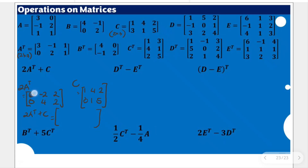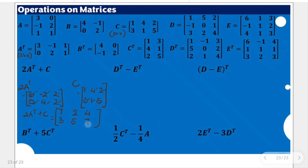6 plus 1 gives 7. Negative 2 plus 4 gives positive 2. 2 plus 2 gives 4. 0 plus 3 is 3. 4 plus 1 is 5. 2 plus 5 is 7. This is the result for the first item.